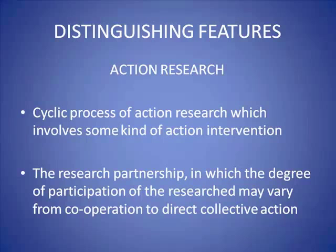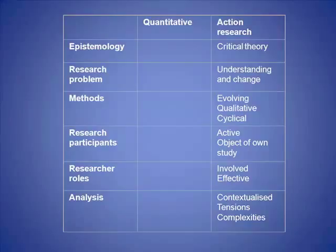It's quite interesting to consider how action research differs from more traditional forms of research. In this diagram I have three columns: the left-hand column has epistemology, research problem, methods, research participants, research roles, and analysis. The next column is quantitative, and the right-hand column is action research. I've tried to put a descriptor for each to help you understand how action research plays out according to these dimensions.